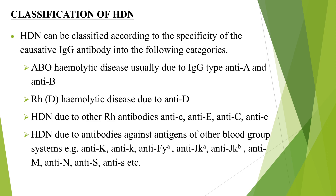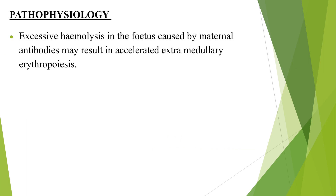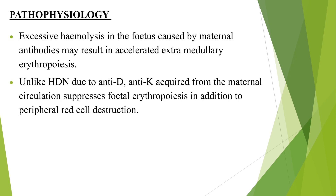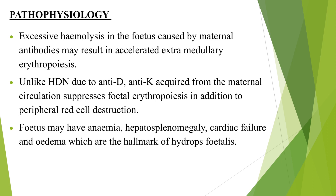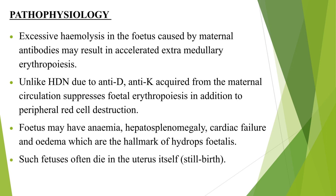Pathophysiology: Excessive hemolysis in the fetus caused by maternal antibodies may result in accelerated extramedullary erythropoiesis. Unlike HDN due to anti-D, anti-K acquired from the maternal circulation suppresses fetal erythropoiesis in addition to peripheral red cell destruction. If this is not adequate to maintain the fetal hemoglobin level, the fetus may have anemia, hepatosplenomegaly, cardiac failure, and edema — the hallmarks of hydrops fetalis. Such fetuses often die in the uterus itself, known as stillbirth.